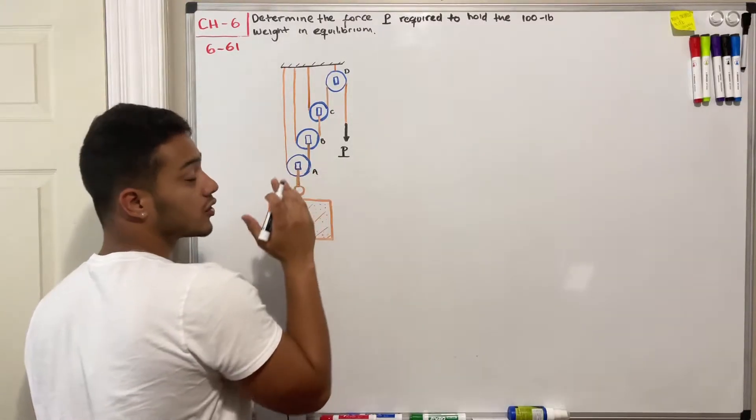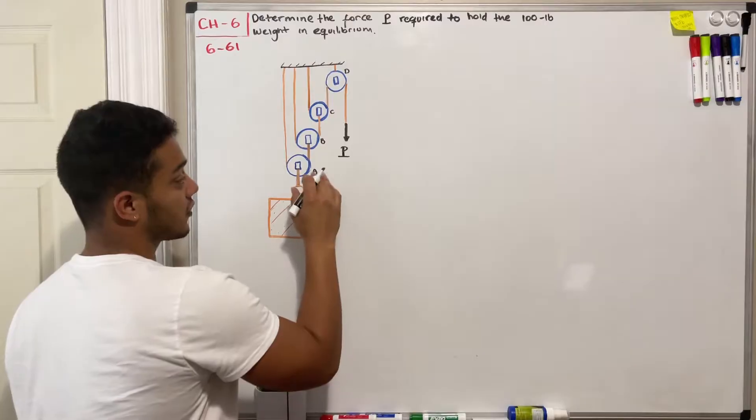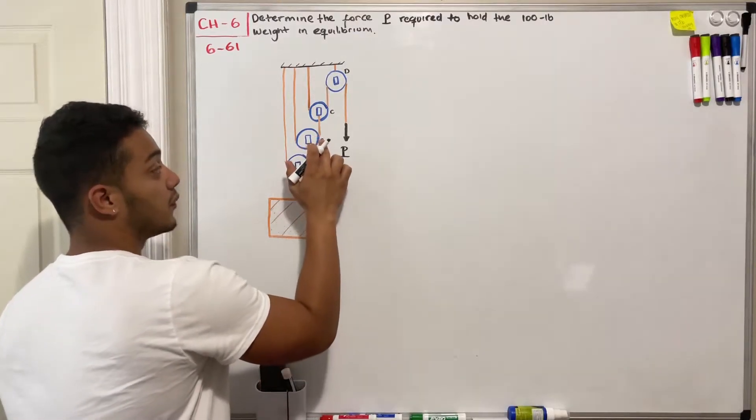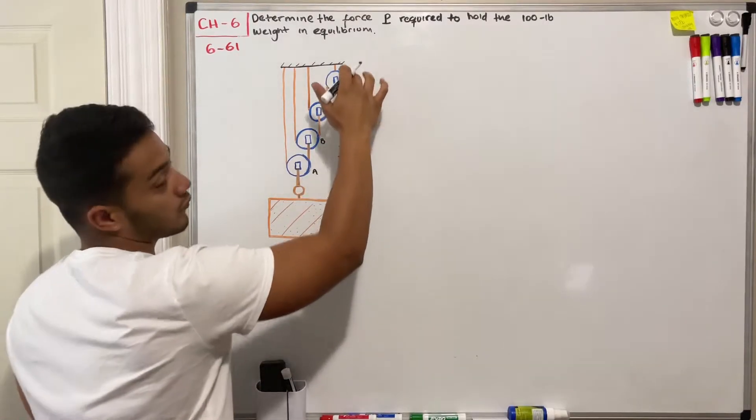In order to solve for this problem we're going to draw free body diagrams of my pulley A, my pulley D, my pulley C and my pulley D.